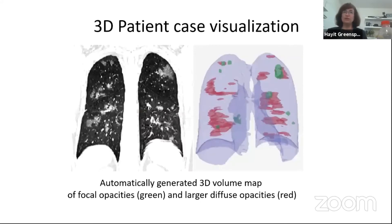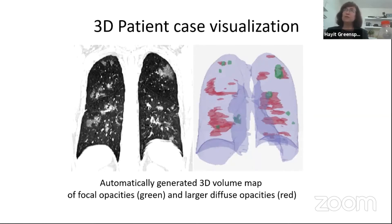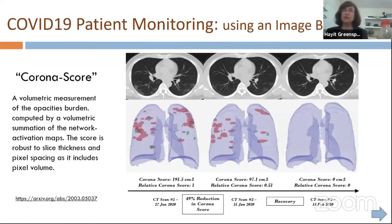2D is just a way for us to proceed to the full 3D case. In the 3D visualization, in green we have the solutions for the more focal opacities from the lung nodule detector, and in red you see the areas of opacity for larger, more diffuse cases. We now have the ability to take a case and present this map in 3D.